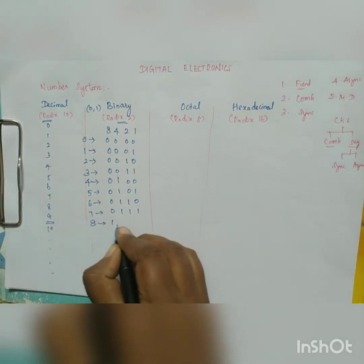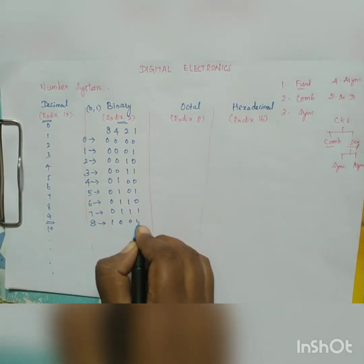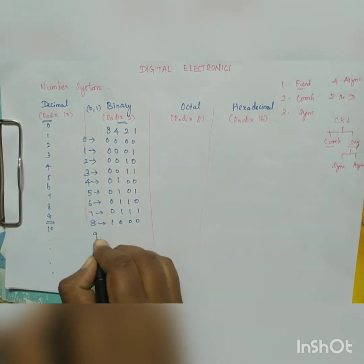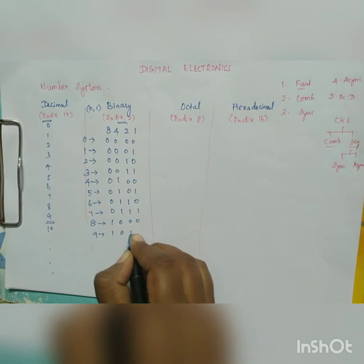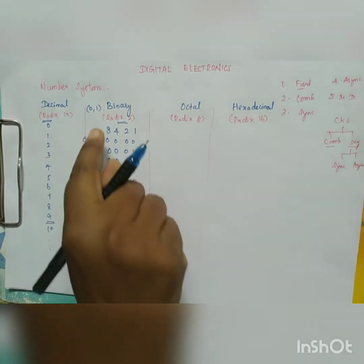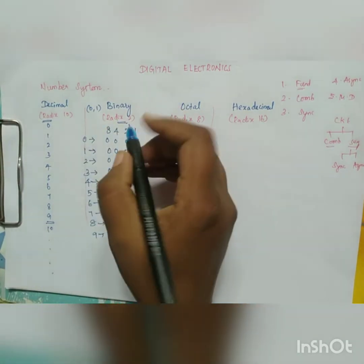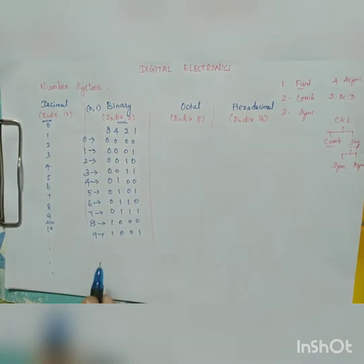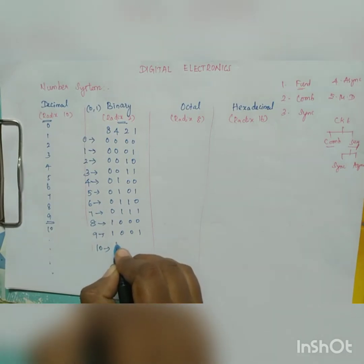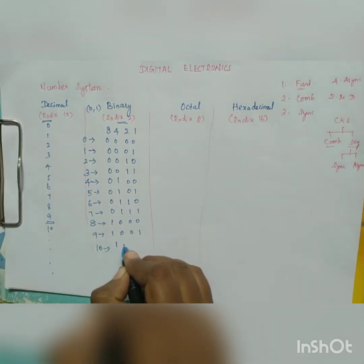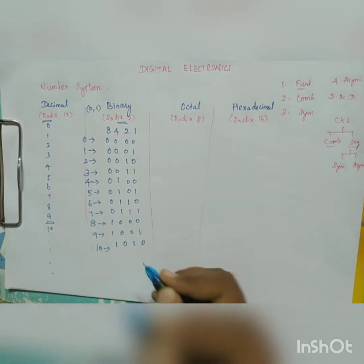8 in binary is 1000. 9 is 1001, because 8 plus 1 is 9. If it is 10, that is 1010.